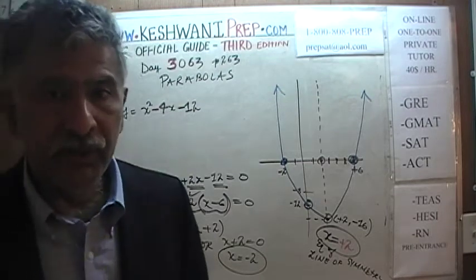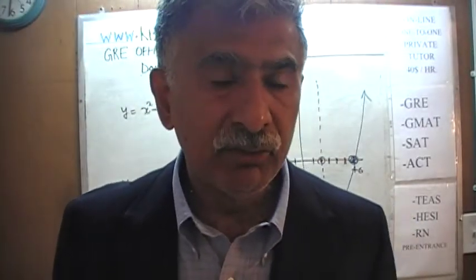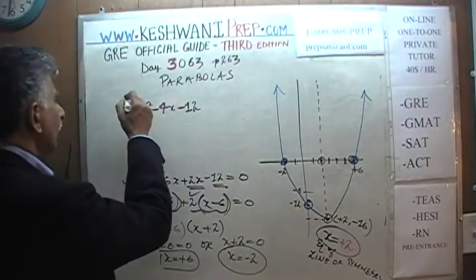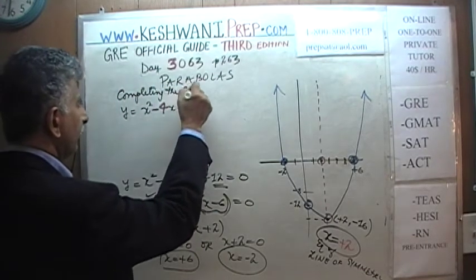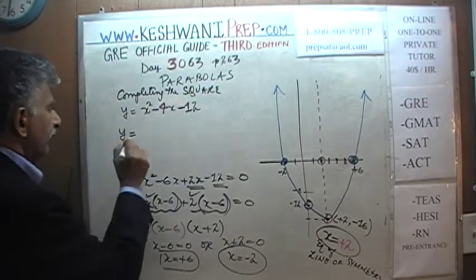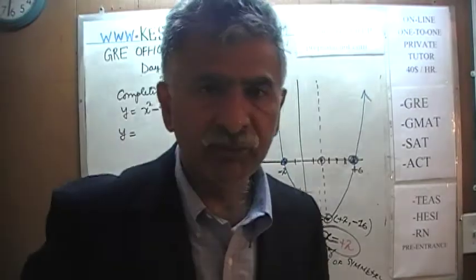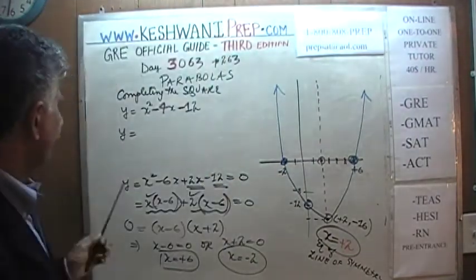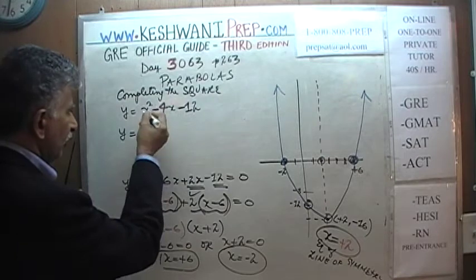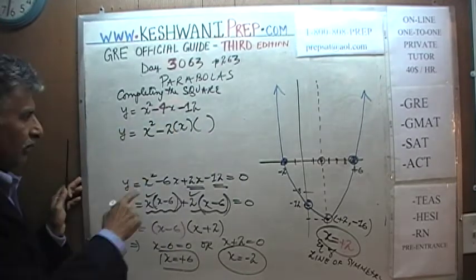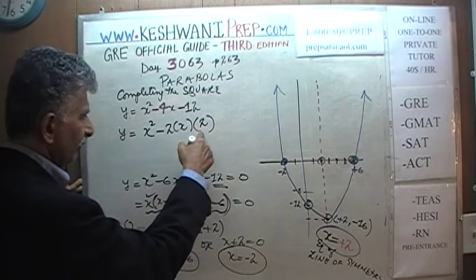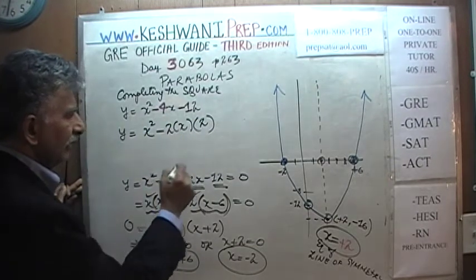The method used to find the equation in vertex form is called completing the square. Starting with y = x² - 4x - 12, we rewrite the middle term as -2·x·2, since 2 times x times 2 gives 4x. We need x² - 2·x·2 + 2² to form a perfect square.